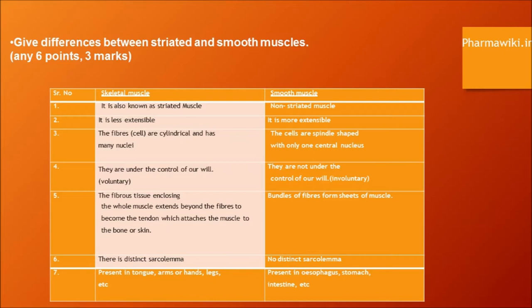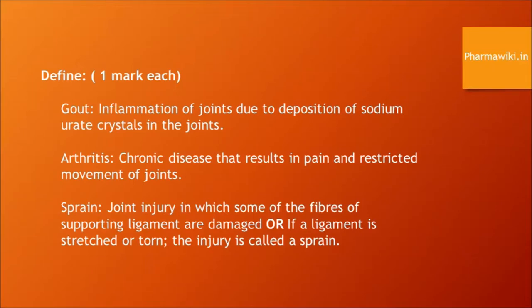Definitions. Gout: inflammation of joints due to deposition of sodium urate crystals in the joints. Arthritis: a chronic disease that results in pain and restricted movement of joints. Sprain: a joint injury in which some of the fibers of the supporting ligament are damaged, or if a ligament is stretched or torn, the injury is called a sprain.